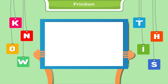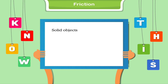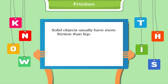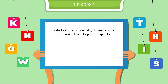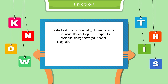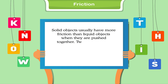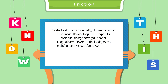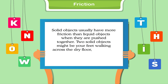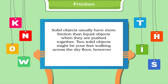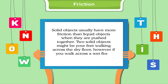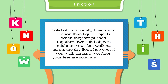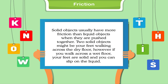Know this: Solid objects usually have more friction than liquid objects when they are pushed together. Two solid objects might be your feet walking across a dry floor. However, if you walk across a wet floor, your feet are solid and you can slip on the liquid.